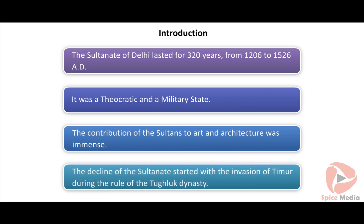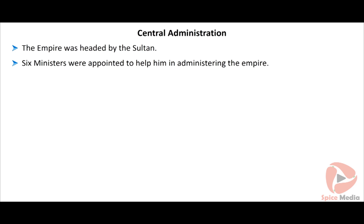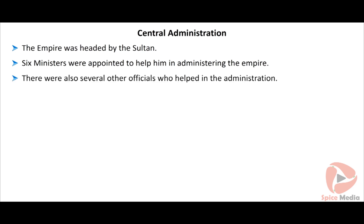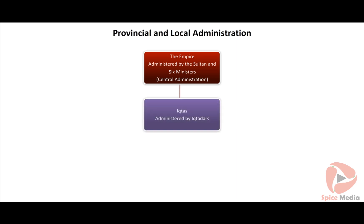The Sultanate of Delhi lasted for 320 years from 1206 to 1526 AD. It was a theocratic and a military state. Theocracy is a form of government in which God is recognized as the supreme ruler. The Sultanate was ruled according to the dictates of Islamic laws. The contribution of the Sultans to art and architecture was immense — a combination of Indian and Islamic styles.